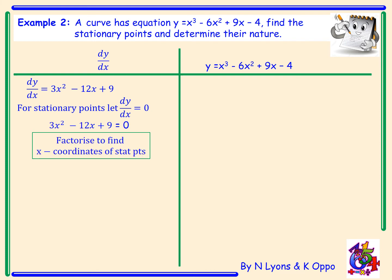To find the x-coordinates we factorise. We take out a common factor of 3 to leave x squared minus 4x plus 3 equals zero, which factorises to give (x minus 1)(x minus 3). Setting each bracket equal to zero gives x equals 1 or x equals 3. To find the nature, we use our second derivative: d²y/dx² equals 6x minus 12, found by differentiating 3x squared minus 12x plus 9.